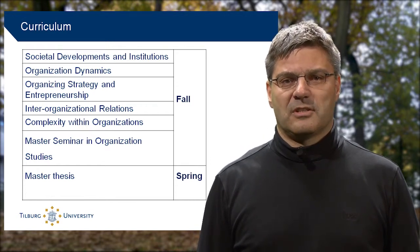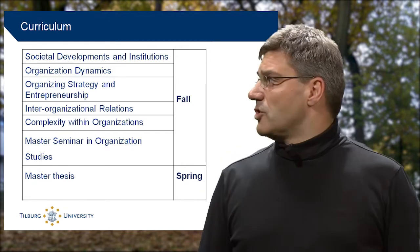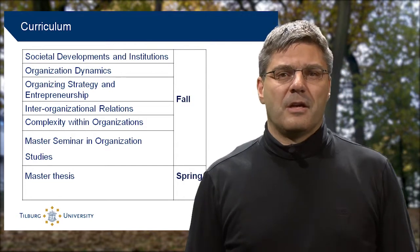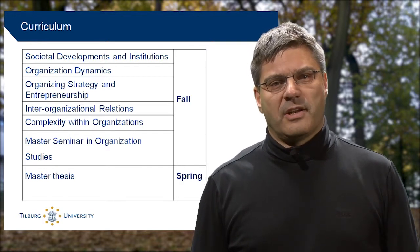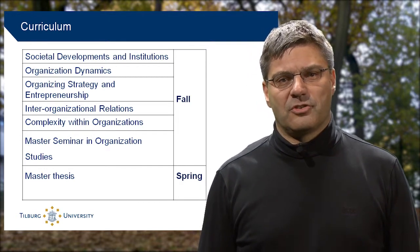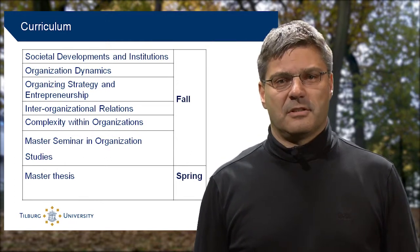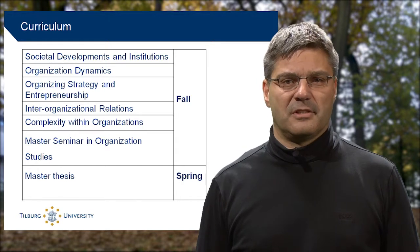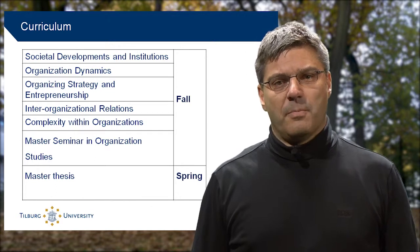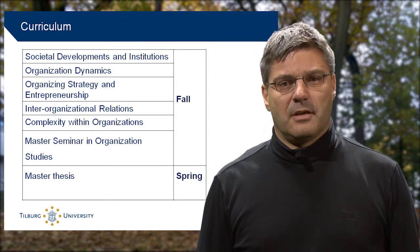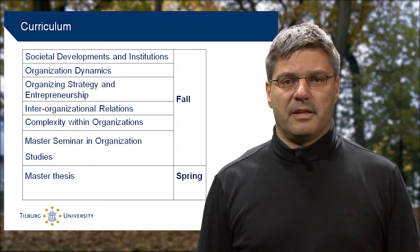Organization Dynamics covers changes within organizations and how we can influence and intervene in these changes. The course Strategy and Entrepreneurship combines the two topics and asks how we can organize the strategy-making processes in organizations, for example to adjust them to new market conditions. One example students learn about is the bottom of the pyramid — how organizations, especially companies, can conquer new markets in countries where people have very little money but where there are a lot of them, for example in India.